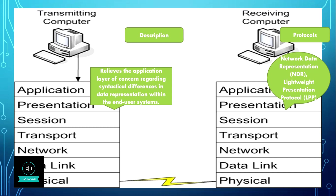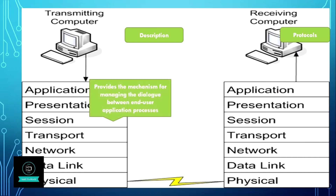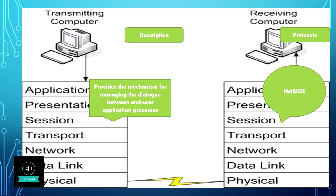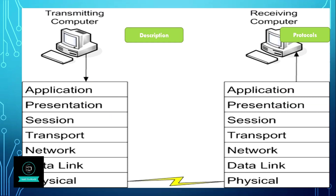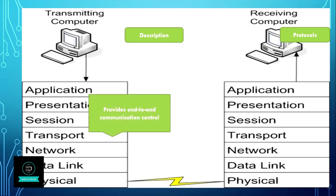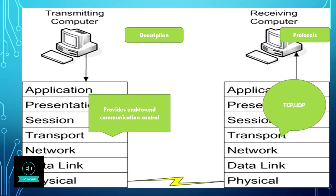The fifth layer is the session layer. It provides the mechanism for managing the dialogue between end-user application processes. It works on protocols such as NetBIOS. The fourth layer is the transport layer. It provides end-to-end communication control and works on protocols TCP and UDP.